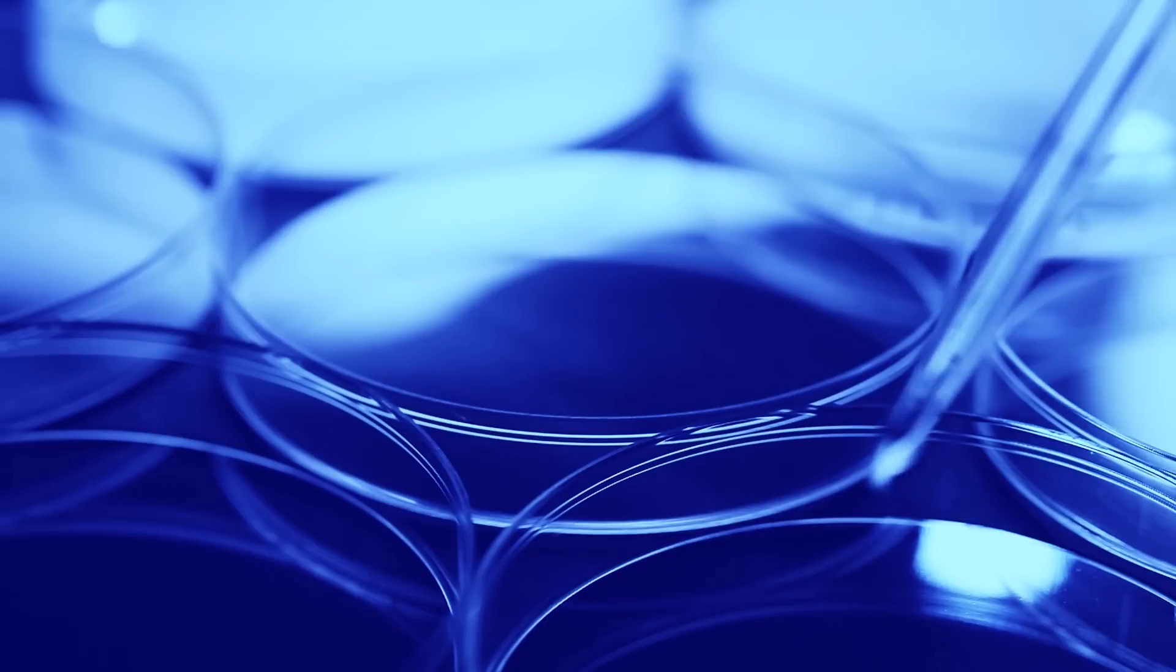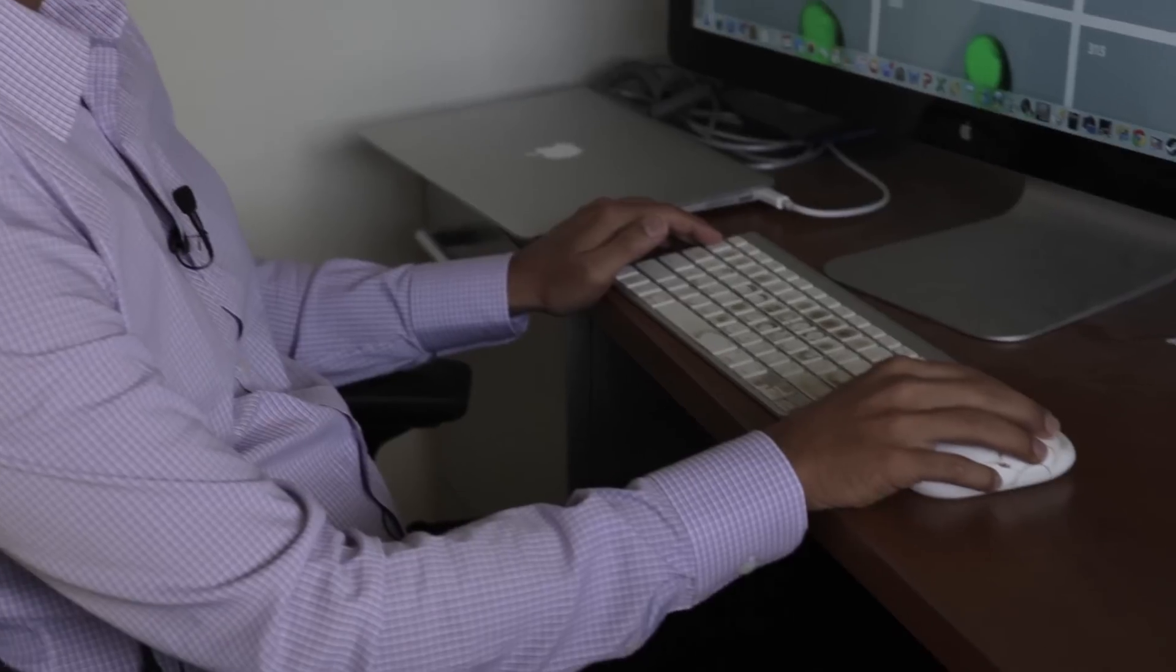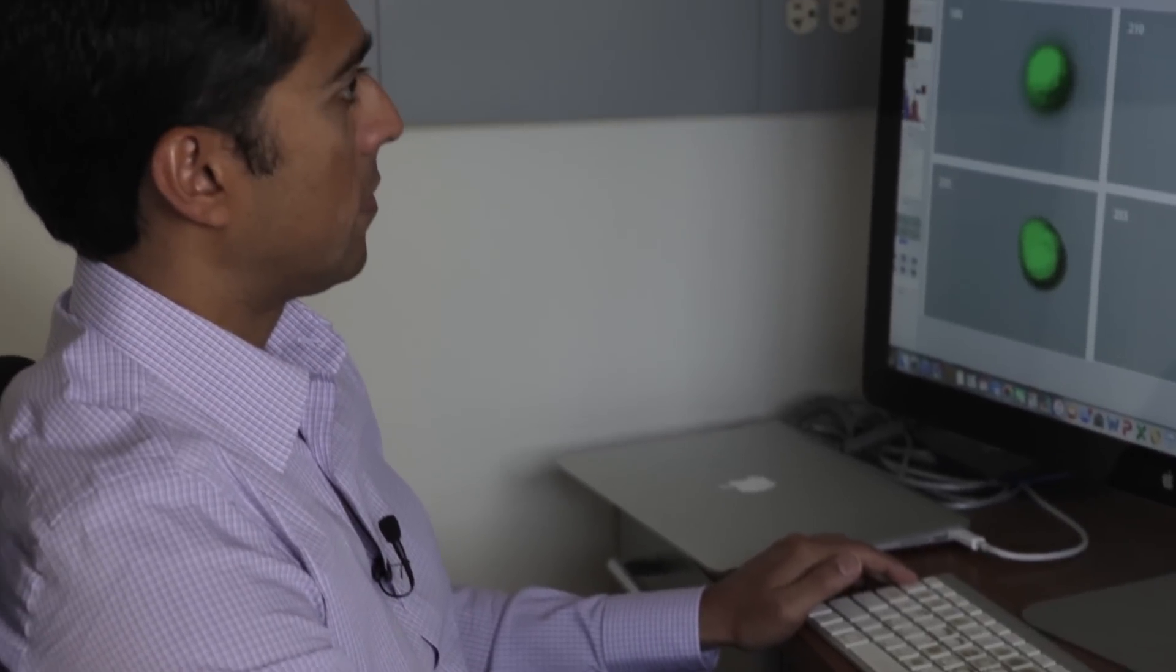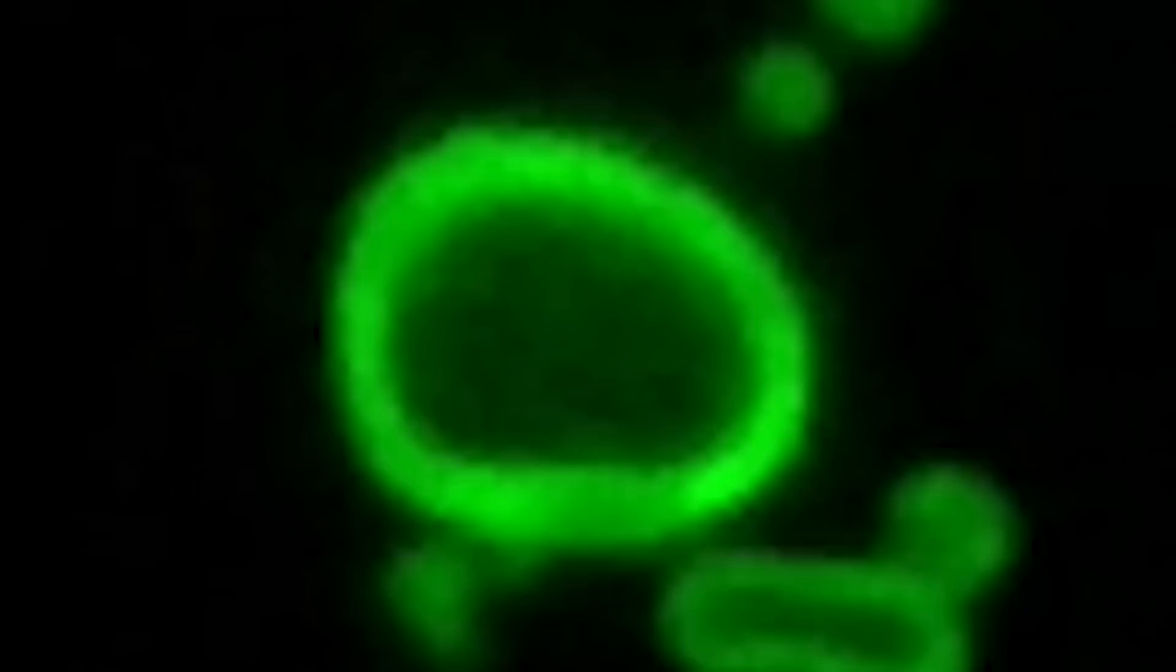Like a tiny petri dish at the University of California, San Diego. Scientists have developed the first synthetic cells that can reproduce themselves over and over.